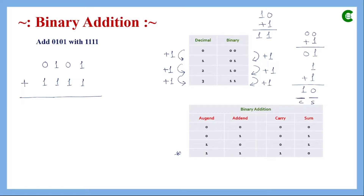We now apply these rules to add the two 4-bit numbers. In the first position, both values are 1, so 1 plus 1 gives sum 0 and carry 1. Moving to the next position, 0 plus 1 gives 1, but then that 1 is added with the carry of 1 from the previous position, giving sum 0 and another carry. Then 1 plus 1 gives 10, and adding one more carry of 1 gives 11.